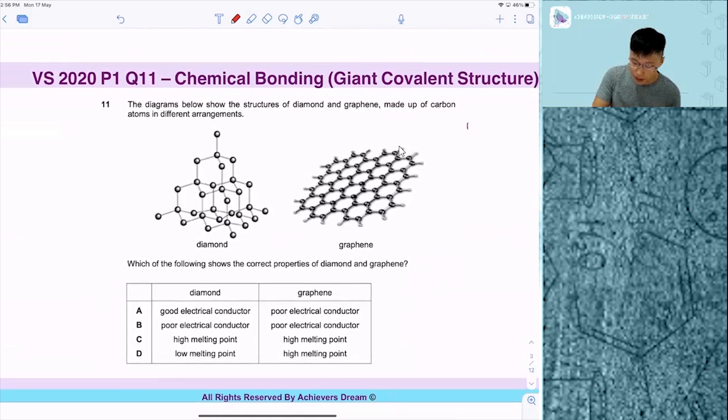In your syllabus, the three giant covalent structures are diamond, graphite, and silica. But today, let's go a little further than the syllabus and go through something that is an extension.